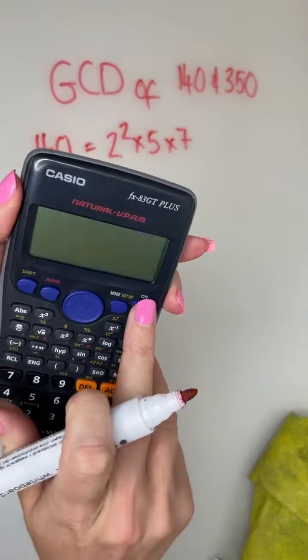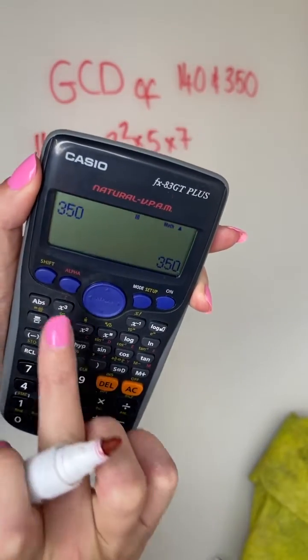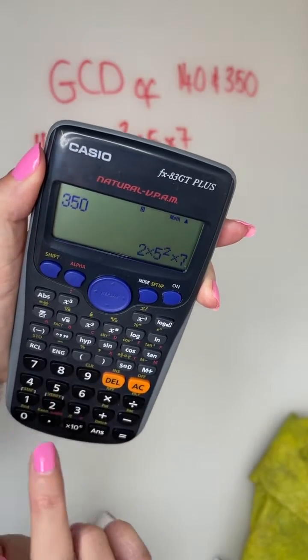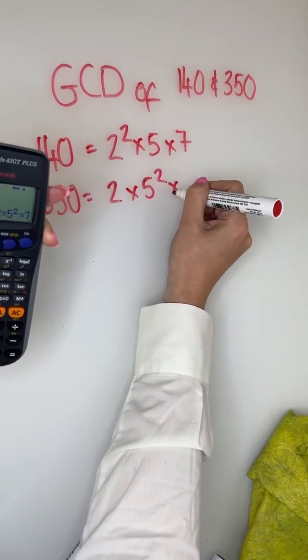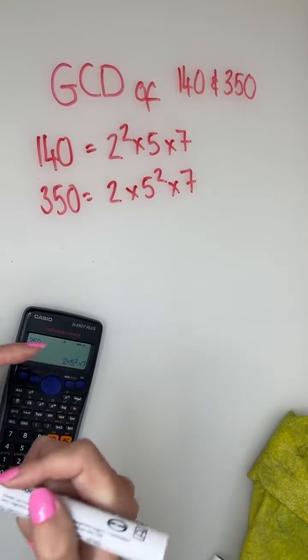Exact same now for 350. Shift, fact, write them down: 2 multiplied by 5 squared multiplied by 7. And then you take out your common factors.